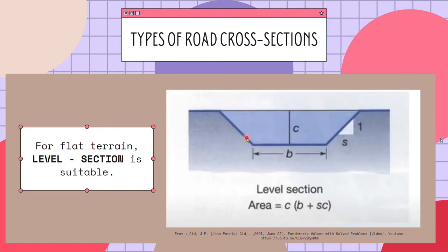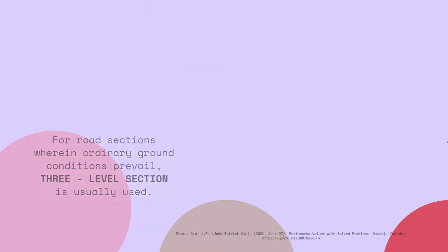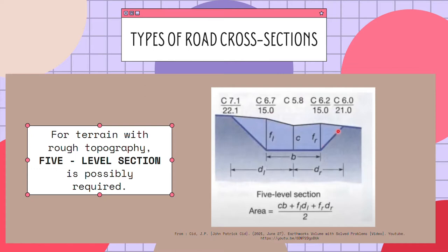For all types, the width of the finished roadway, denoted B, is fixed by project requirements. For road sections where ordinary ground conditions prevail such as a relative slope, a three-level section is usually used. The photo shown is an example of a fill section, where we fill the area with materials to raise it to level C, requiring computation of the areas of the trapezoids present. For terrain with rough topography, a five-level section is possibly required.